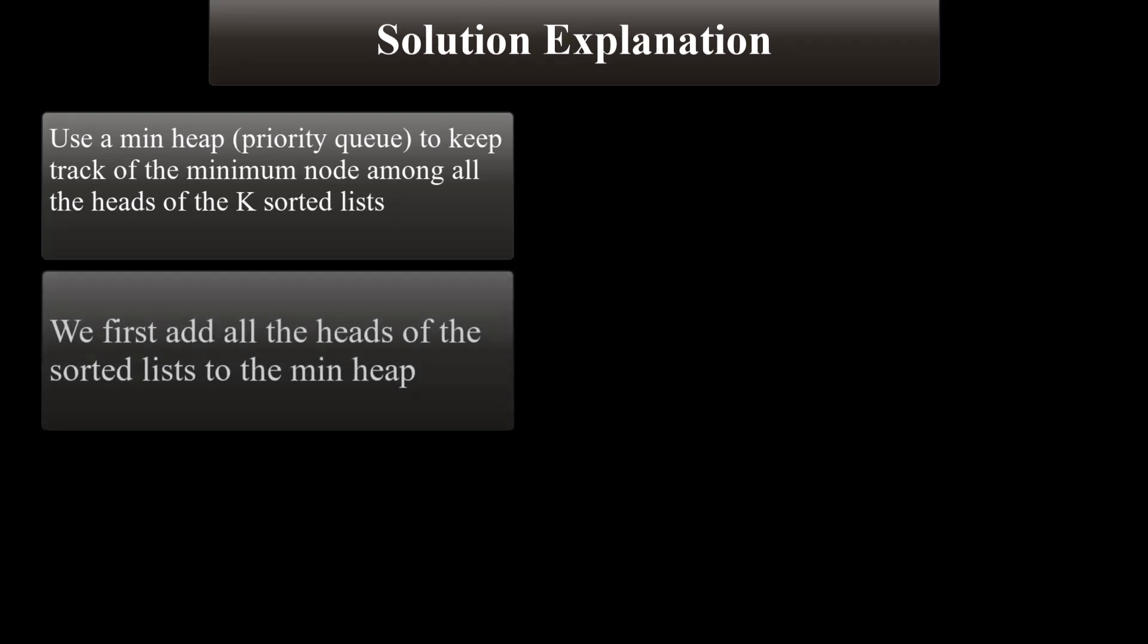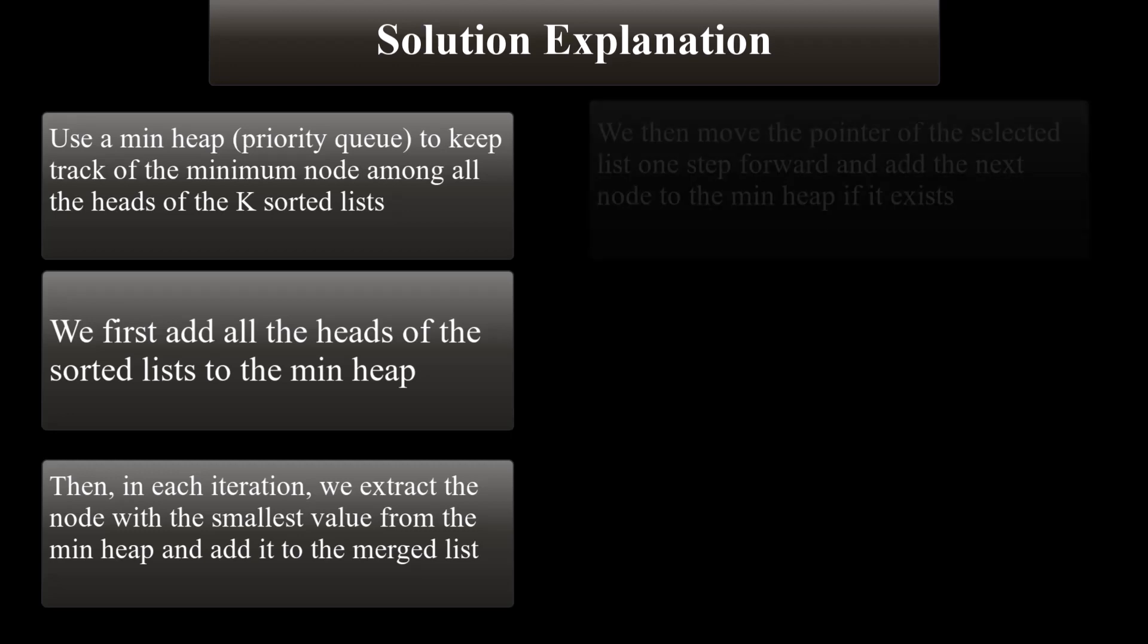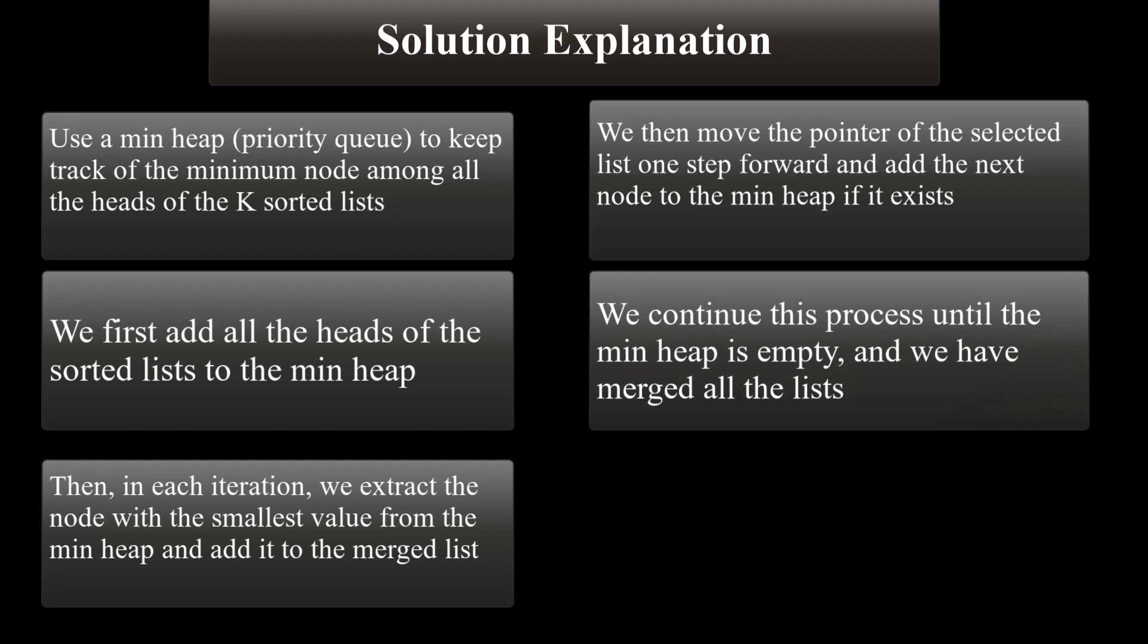To solve this problem, this is what we're going to be doing, and then we're going to look at the code. We use a min heap priority queue to keep track of the minimum node among all the heads of the K sorted lists. We're going to first add all the heads of the K sorted lists to the min heap. Then in each iteration, we extract the node with the smallest value from the min heap and add it to the merged list. We then move the pointer of the selected list one step forward and add the next node to the min heap if it exists. We continue this process until the min heap is empty and we have merged all the lists together.